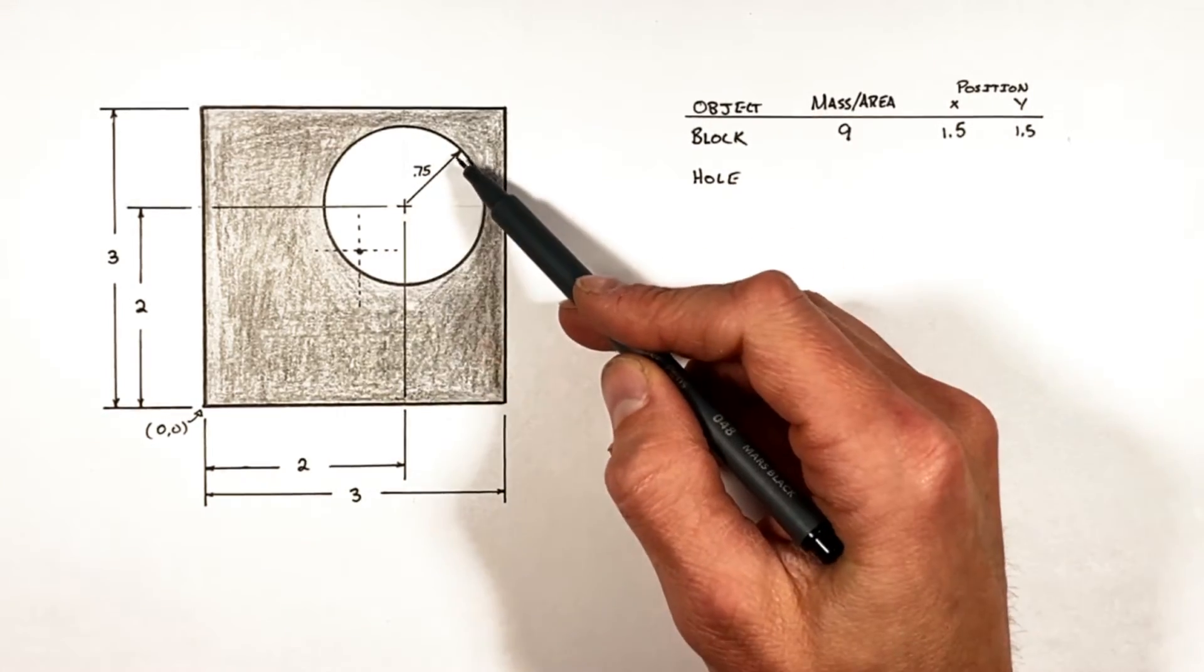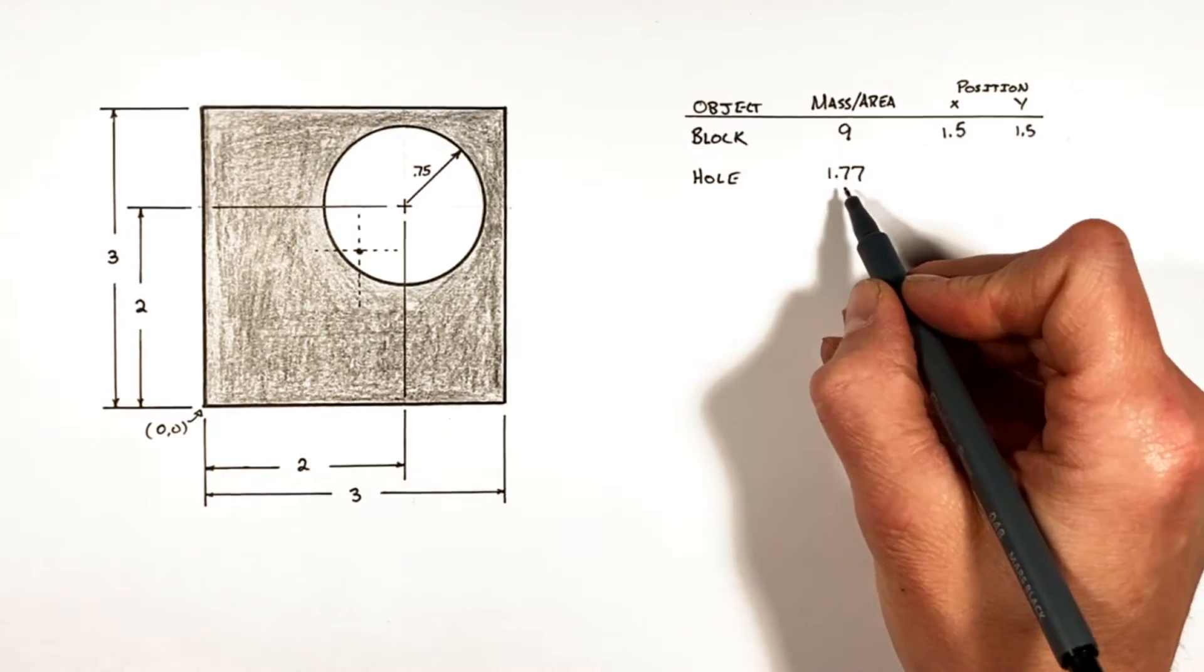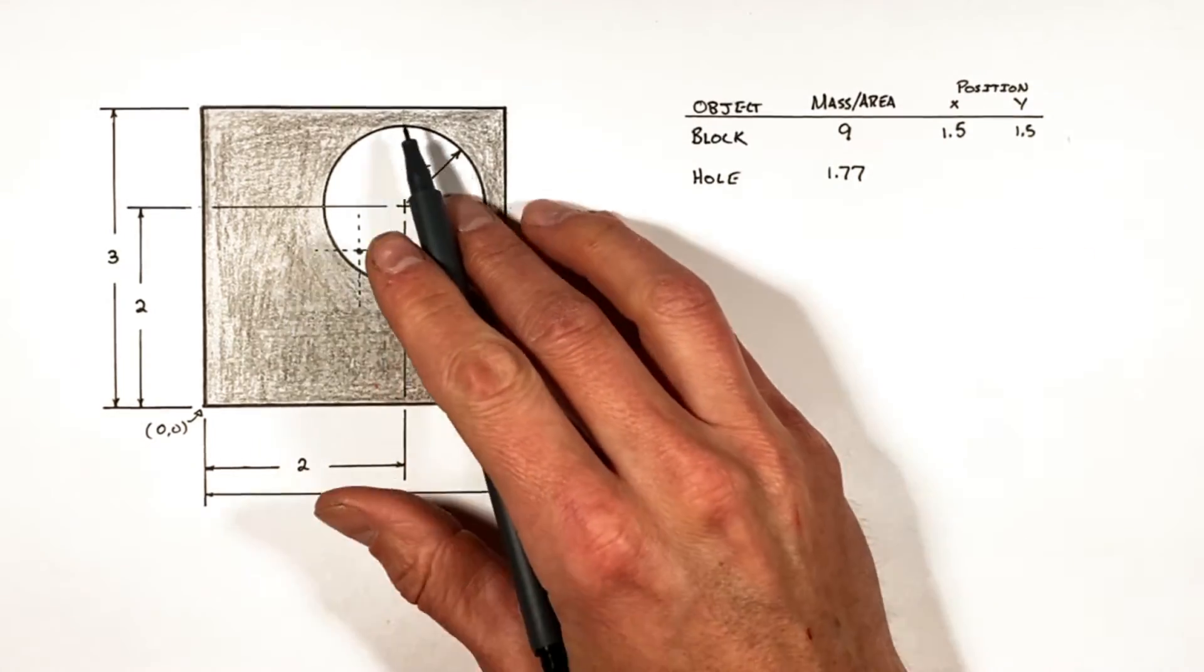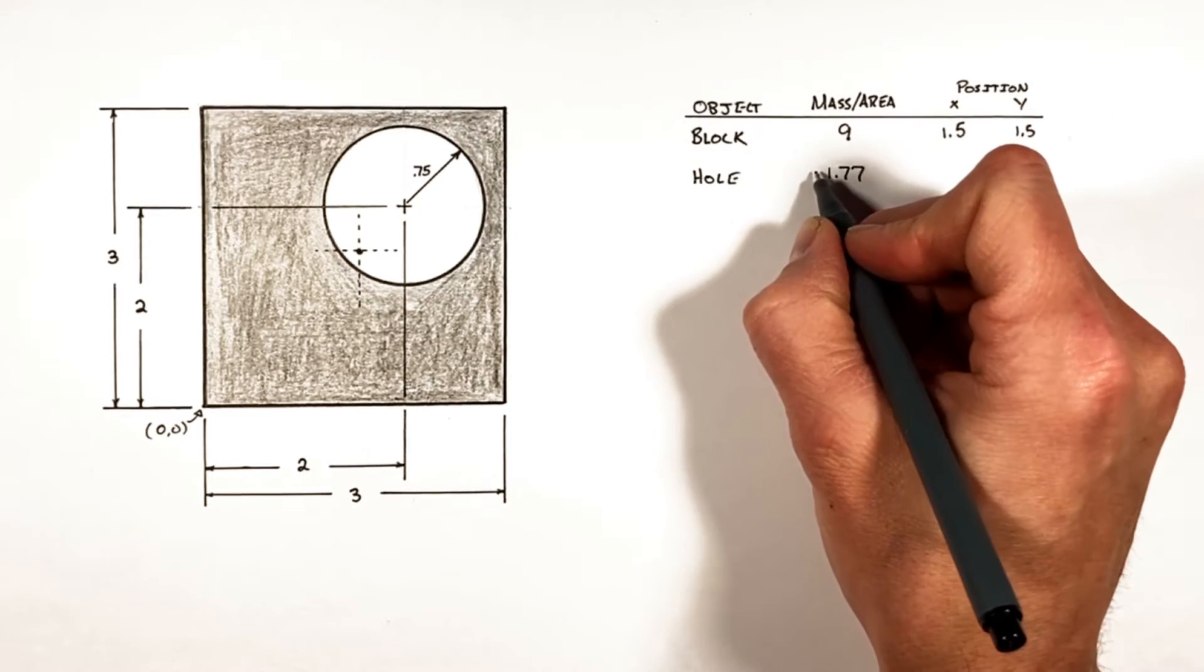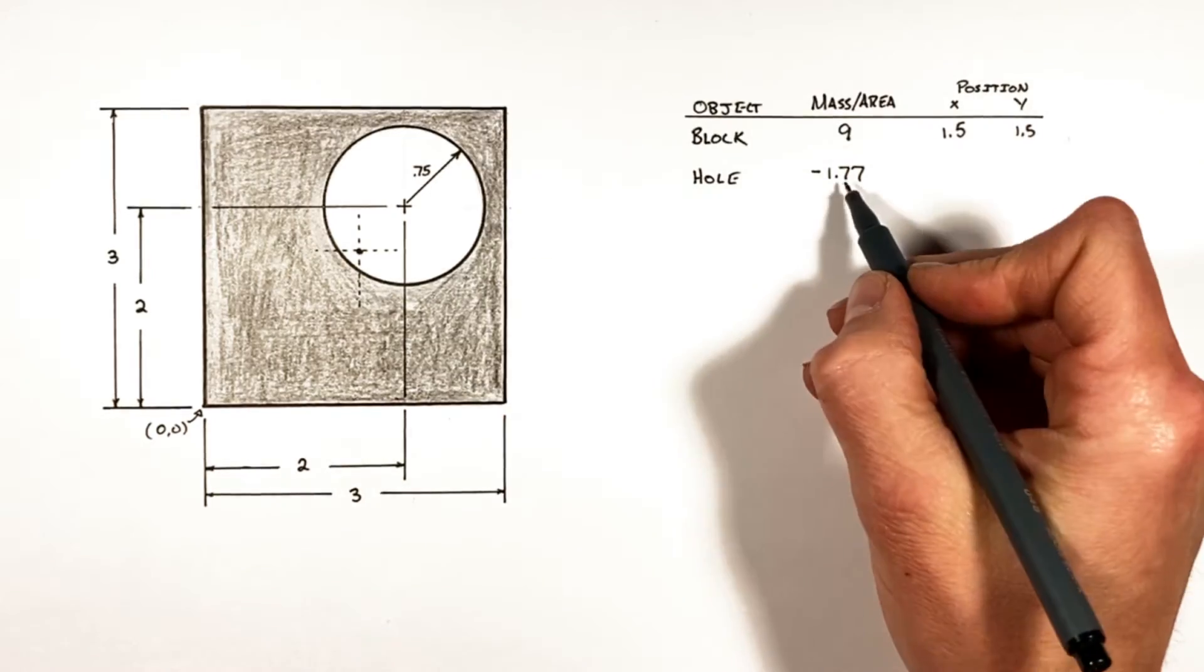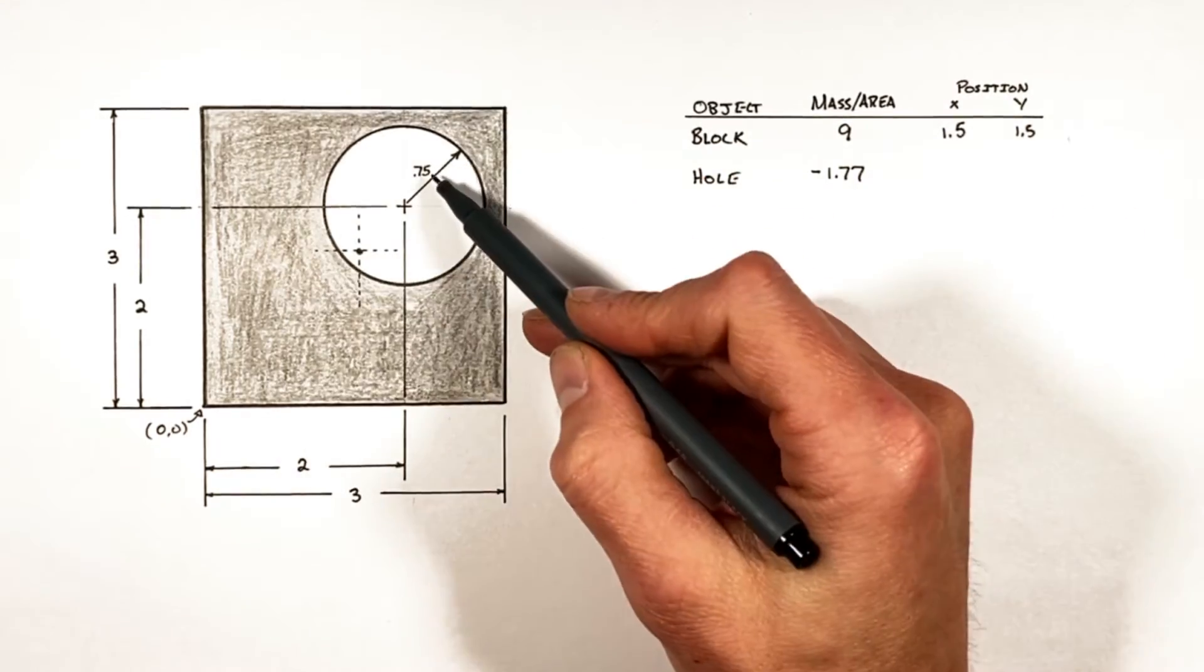But here's the trick: because we cut away this material, this hole actually has a negative area. We've removed material. If we were to leave this positive, we would be saying we're actually adding extra material to this point.